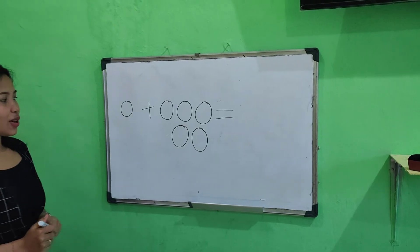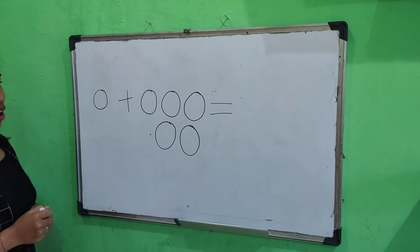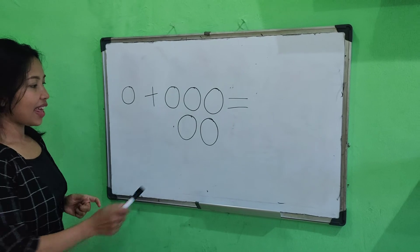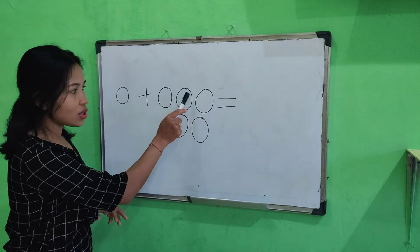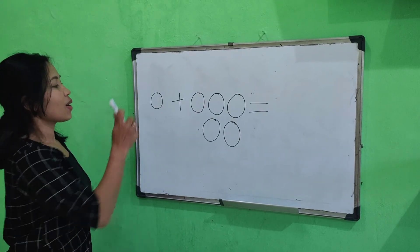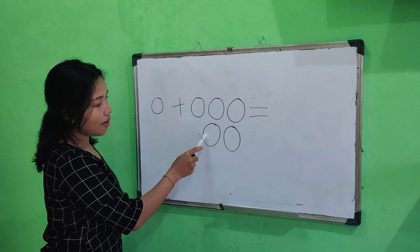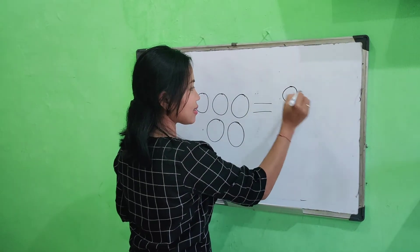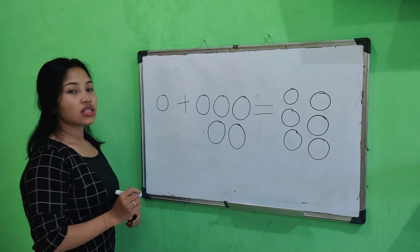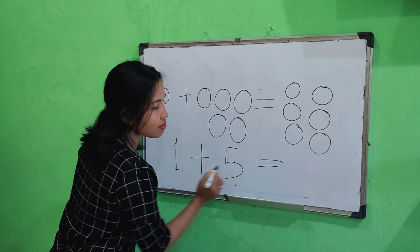Okay, next. Look at here. What is this? Circle. Okay, let's count all of this circle. Here, Nisema has one circle. Here, Nisema has one, two, three, four, five. Five circle. How many circle? Let's count together. One, two, three, four, five, six. Six circle. So, one plus five equal six.